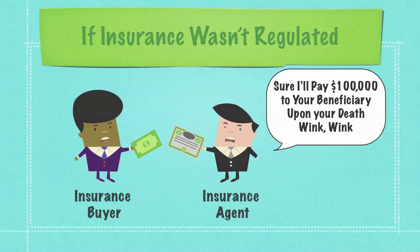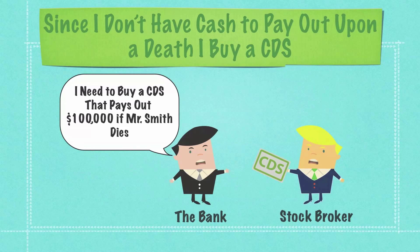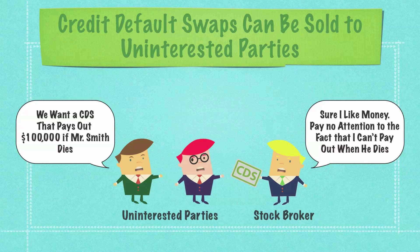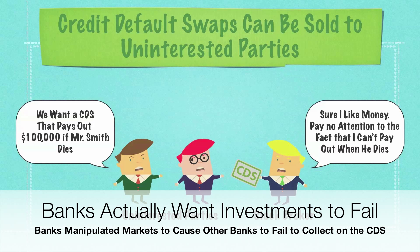If the life insurance industry weren't regulated like the CDS market, this is how it would work: I convince you to pay me $20 a month for $100,000 payable on death. I don't create a separate account to pay your beneficiary that $100,000. You die, your beneficiary shows up wanting $100,000, and I don't have it. What's worse is credit default swaps can be sold to uninterested parties. In this life insurance example, people with no interest in Mr. Smith's life could go pay a bank a certain amount of money, and whenever Mr. Smith dies, they would receive a payout — if the bank actually has any money to pay them. So those parties have more interest in Mr. Smith's death than in his life. In unregulated markets this is possible; in regulated markets like life insurance, it is not.